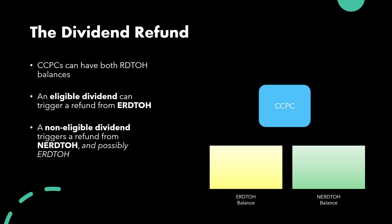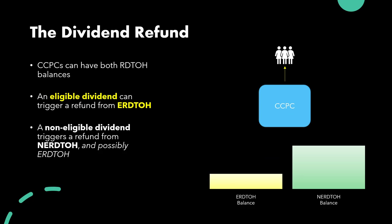Both of these account balances belong to the same Canadian-controlled private corporation. Like any CCPC, this CCPC has shareholders. If this corporation chooses to pay an eligible dividend to those shareholders, that can trigger a refund from the eligible RDTOH account balance, ultimately reducing the amount in the account. If the size of the dividend is large enough, we could actually deplete the eligible RDTOH balance entirely.